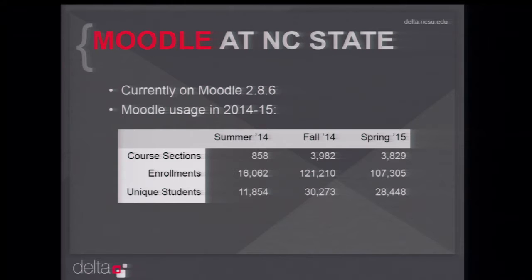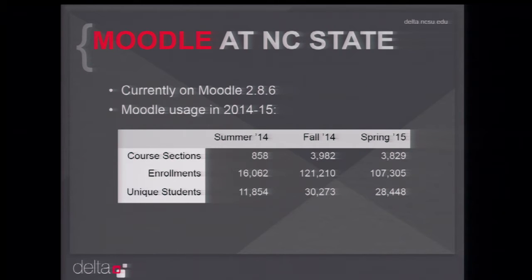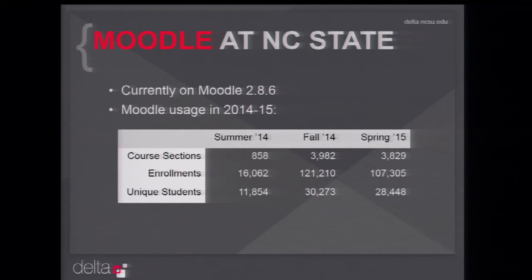A quick snapshot of Moodle at NC State. We're on Moodle 2.8.6. We just moved to 2.8 in May of this year, going from 2.6 to 2.8 in full production. Our usage stats show we're creeping up on 4,000 course sections a semester, enrollments maxed out at 120,000, with about 30,000 unique students. That's the scope of our installation.